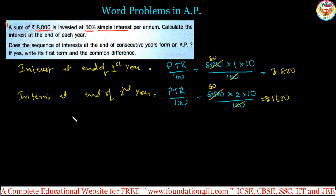Interest at the end of the third year uses the same formula PTR/100. So ₹8,000 times 3 times 10 divided by 100. Simplify: 80 times 3 times 10 equals ₹2,400.